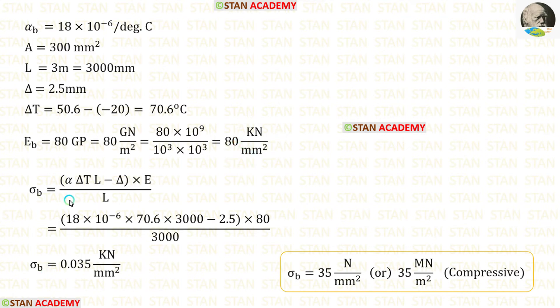If there is yielding in the supports, the formula to find the stress is alpha into delta T into L minus delta into E upon L. In the formula let us apply the values of alpha, L, delta, delta T and the Young's modulus. After that, we are getting the stress in kilonewton per millimeter square.